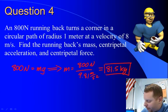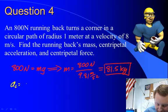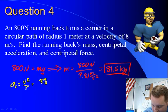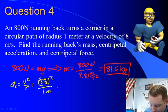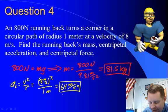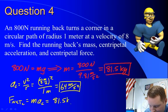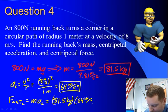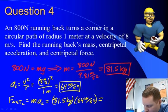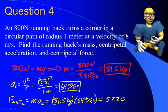Next, we're asked to find the centripetal acceleration. AC equals V squared over R, which is eight meters per second squared over one meter, or sixty-four meters per second squared. And finally, the centripetal force — F net C — must equal M times AC, or 81.5 kilograms times the centripetal acceleration of sixty-four meters per second squared, for a total of around five thousand two hundred and twenty Newtons.